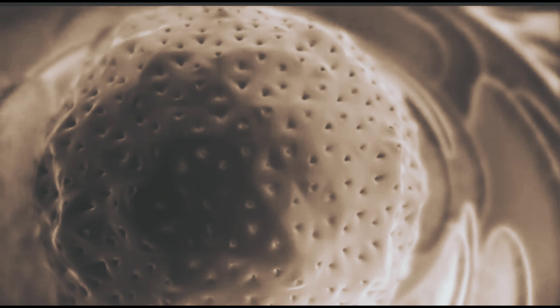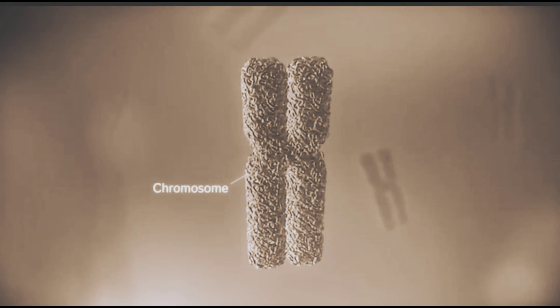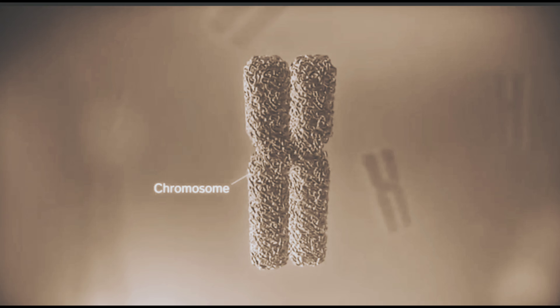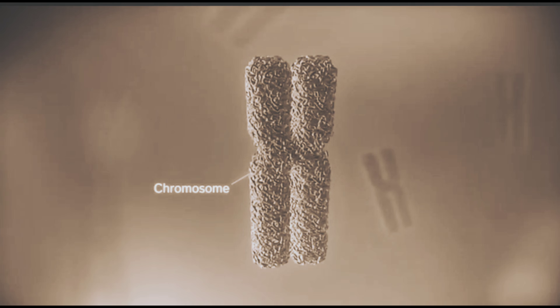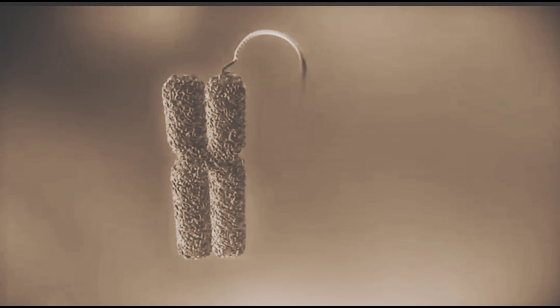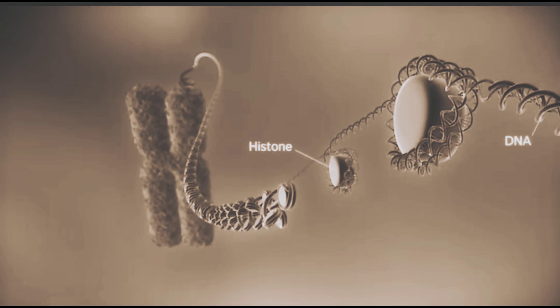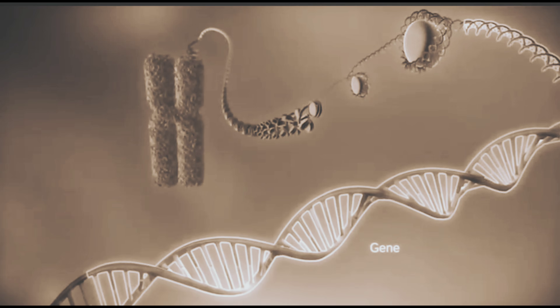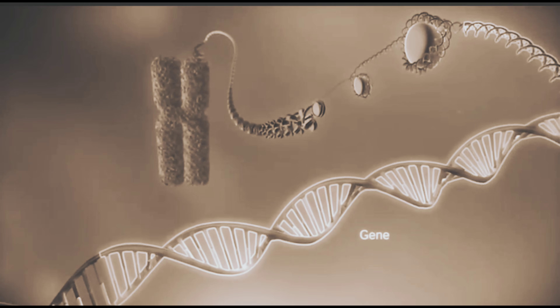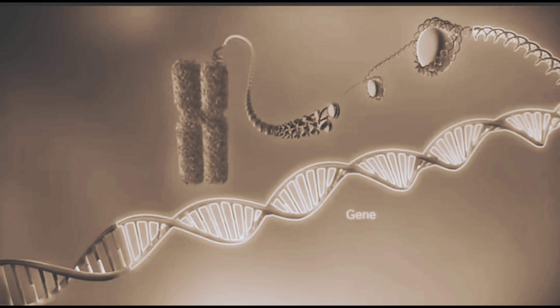In humans, the genome is split between 23 pairs of chromosomes. Each chromosome contains a long strand of DNA, tightly packaged around proteins called histones. These genes contain the instructions for making proteins.